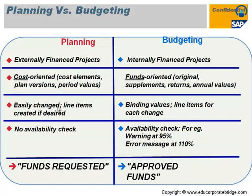The availability check defines how much percentage or tolerance unit is required. For example, at 80% a warning message triggers, at 90% a mail is sent to the appropriate person, and at 100% the system throws an error message. Planning is called a fund request and budgeting is called approved funds.